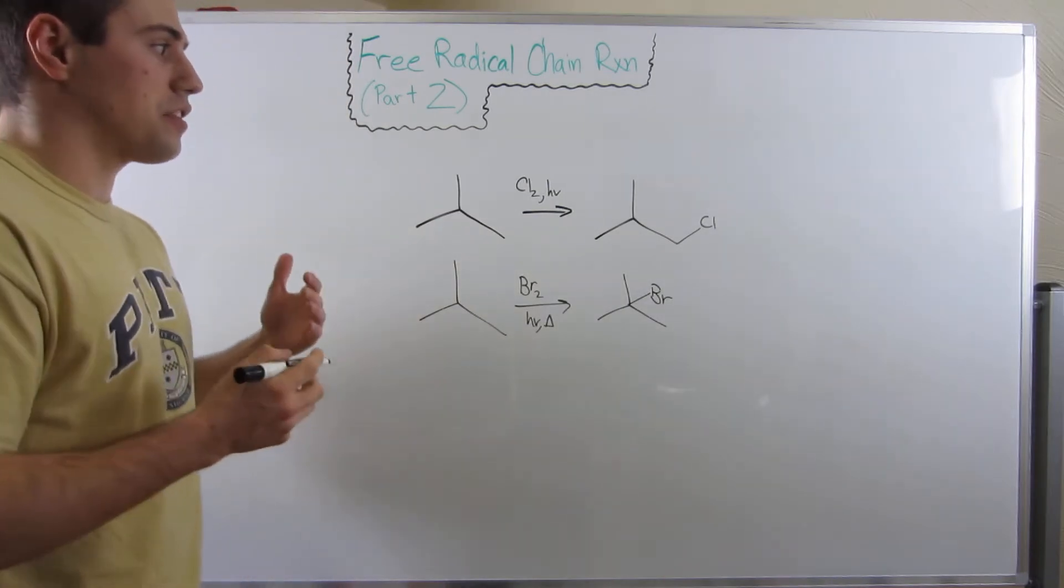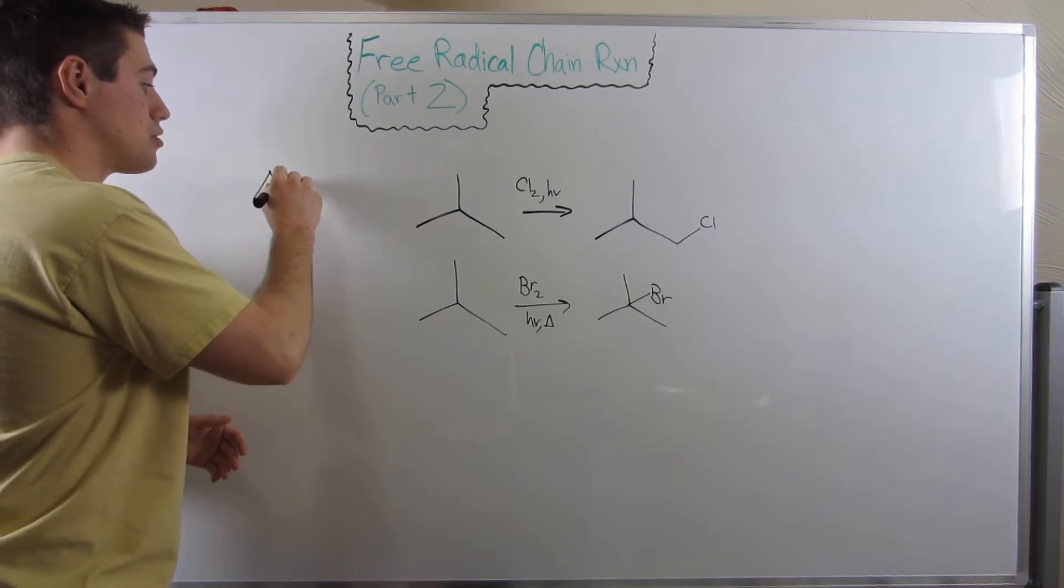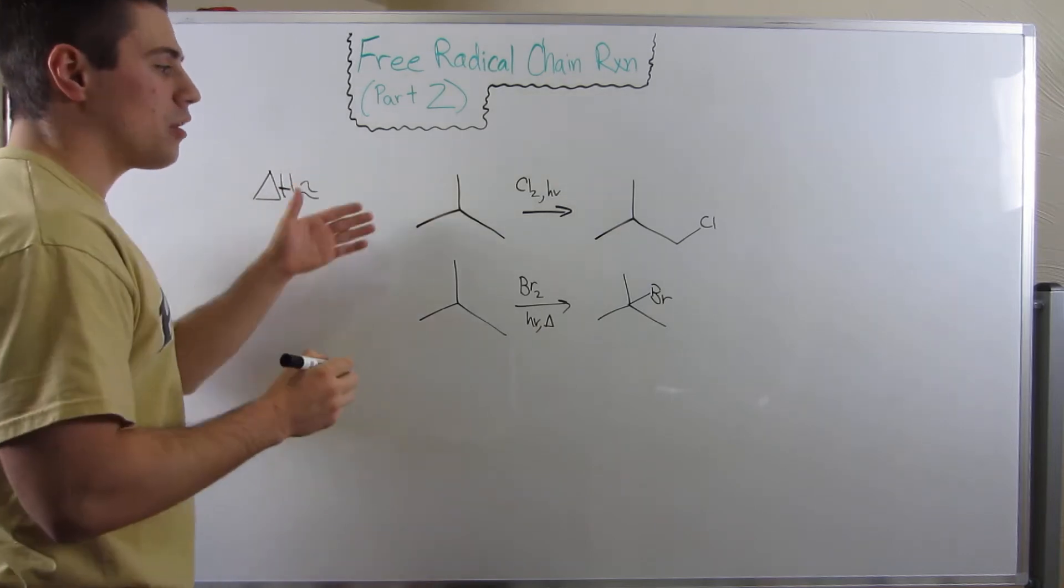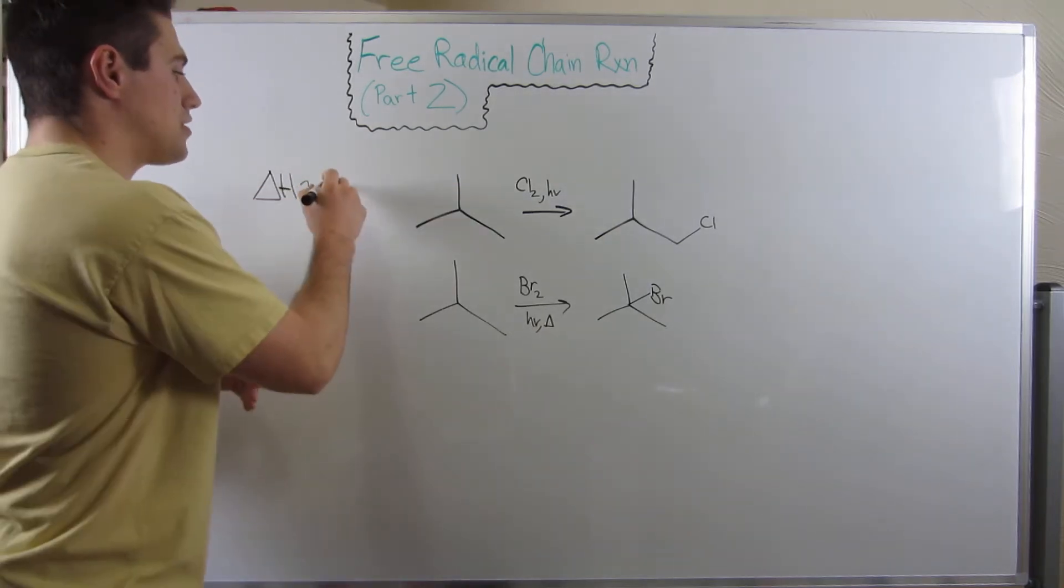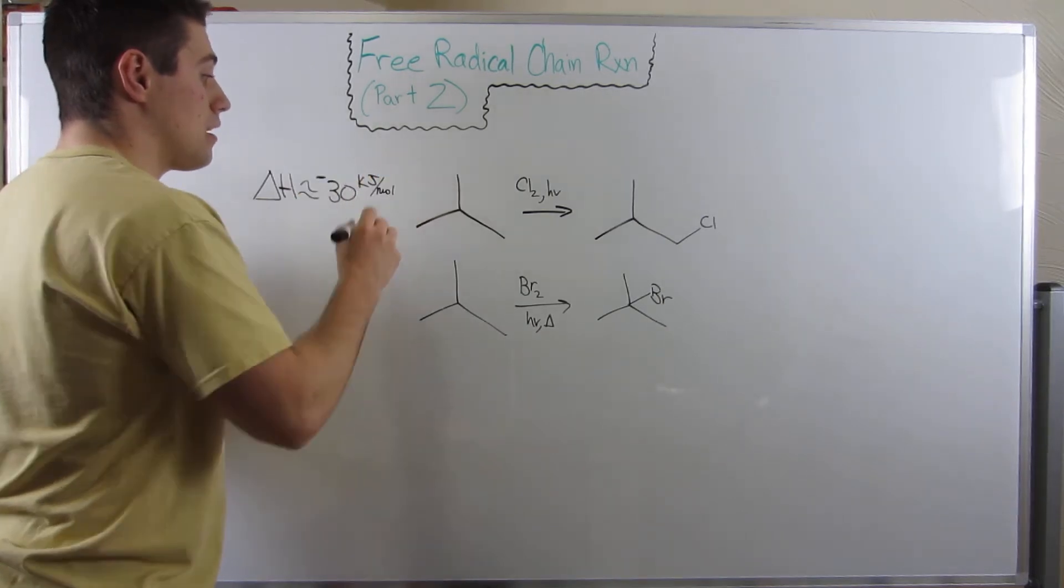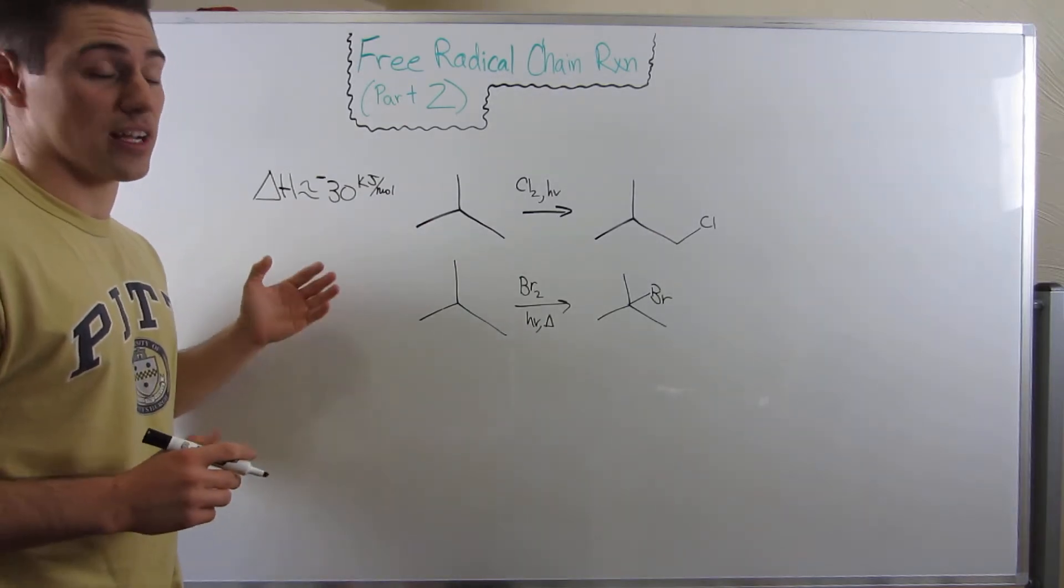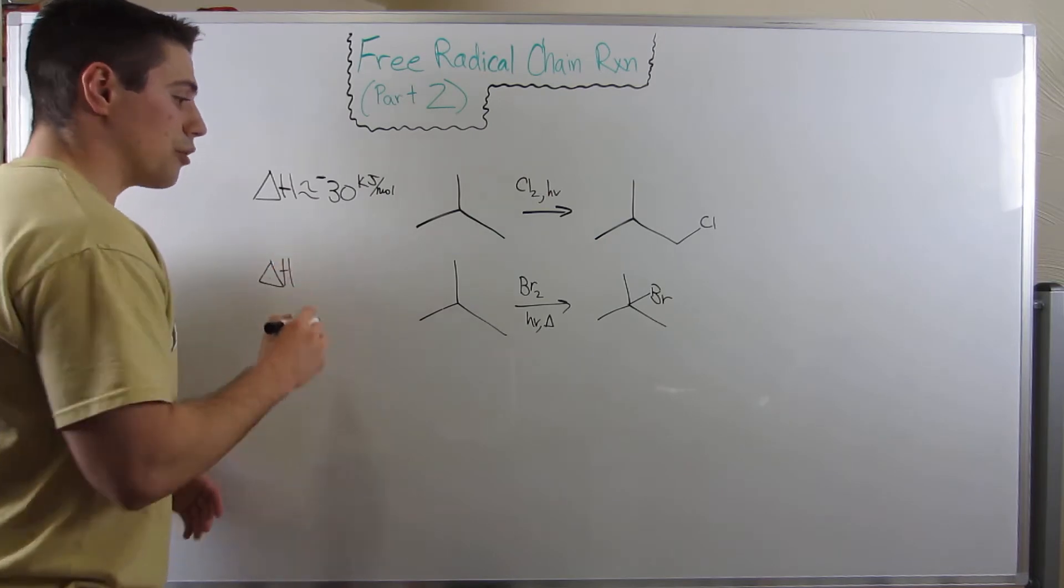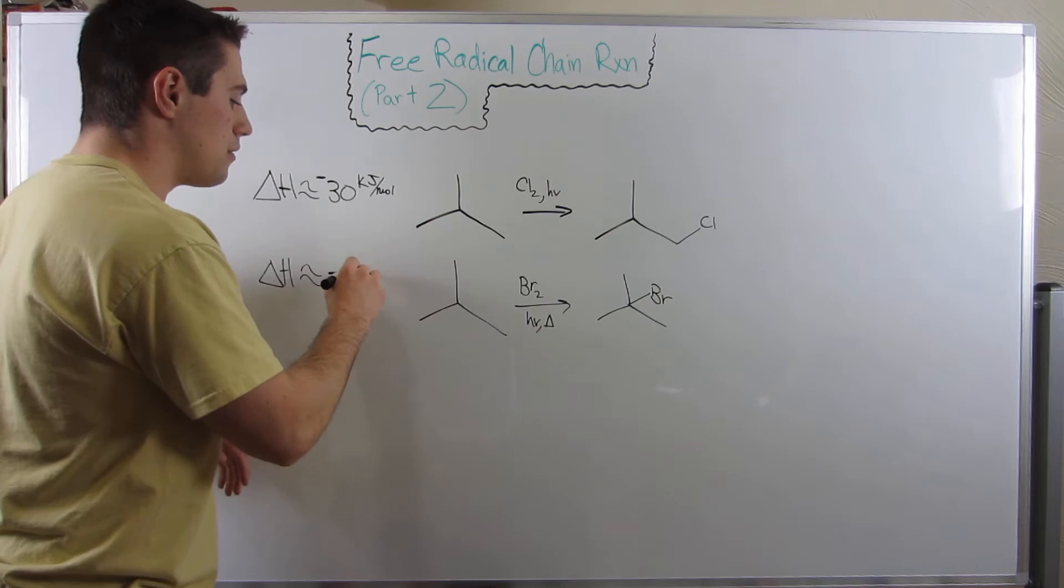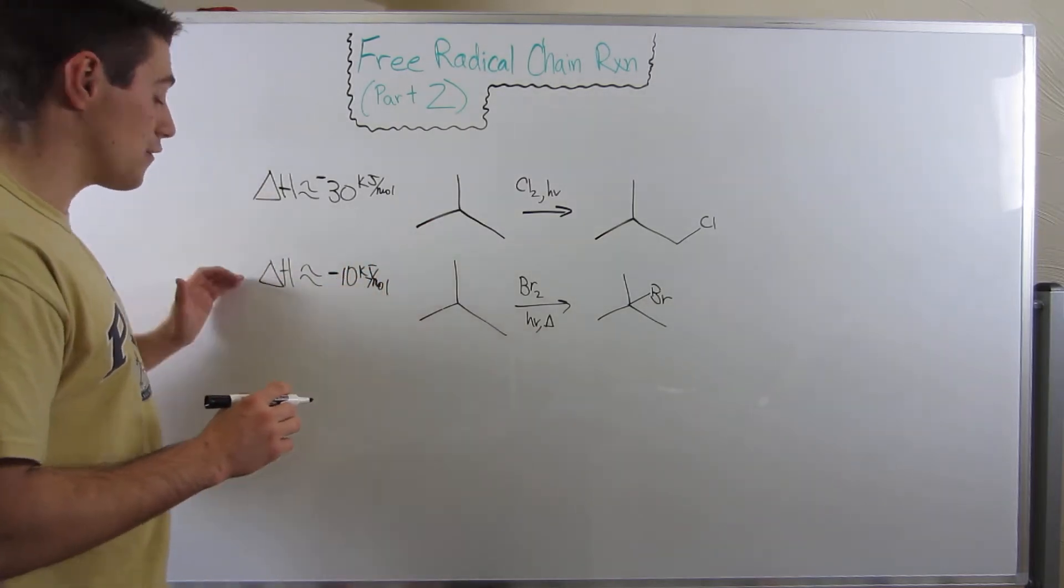First, let me tell you a thing or two about the heats of reactions of these two. Chlorination, free radical chlorination, is extremely exothermic, extremely fast. Roughly, depending on what reactor you use, it's somewhere around negative 30 kilojoules per mole. This is very, very exothermic.